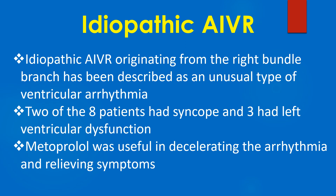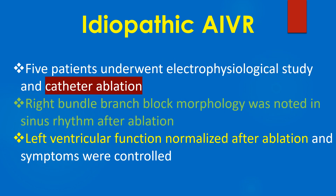Idiopathic AIVR originating from the right bundle branch has been described as an unusual type of ventricular arrhythmia. Of 8 patients studied, 2 had syncope and 3 had left ventricular dysfunction. Metoprolol was useful in decelerating the arrhythmia and relieving symptoms. Five patients underwent electrophysiological study and catheter ablation. Right bundle branch block morphology was noted in sinus rhythm after ablation, and left ventricular function normalized after ablation with symptoms controlled.